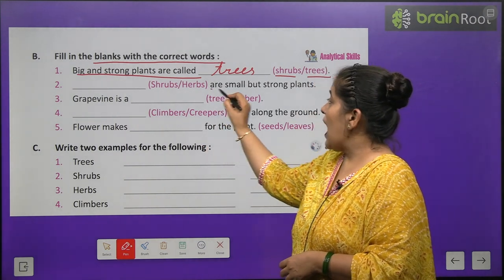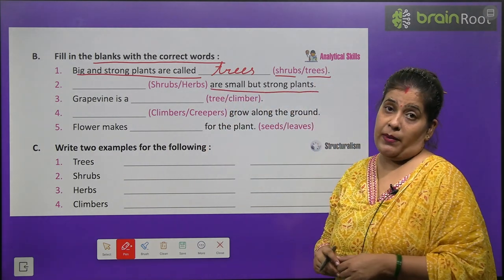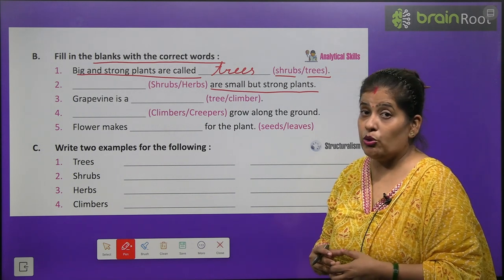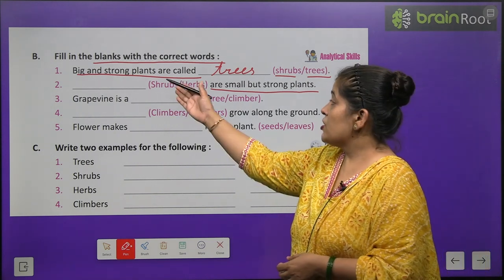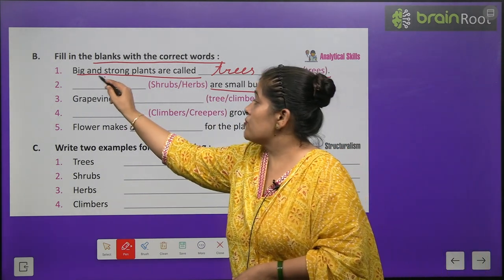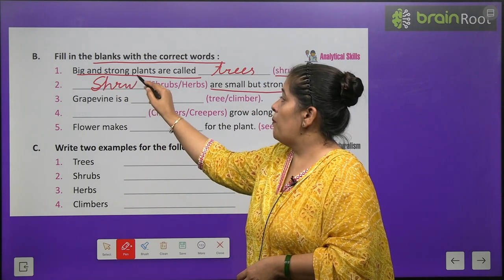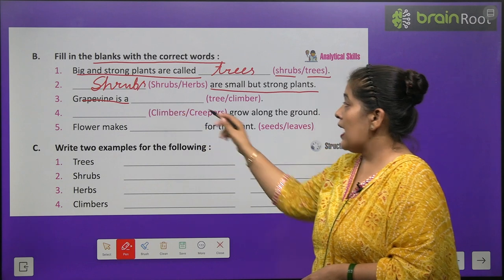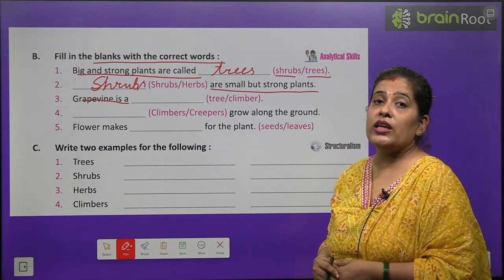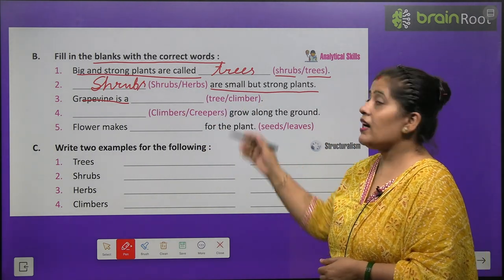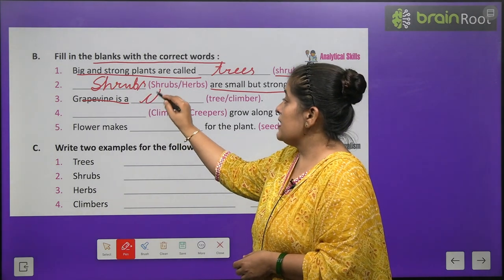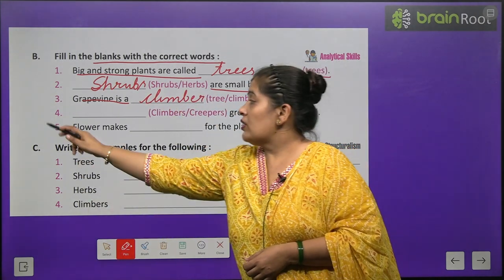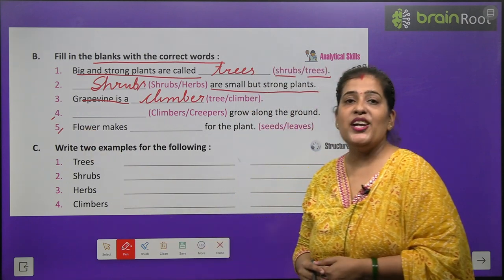Number two: dash are small but strong plants — shrubs or herbs? The correct option is shrubs — S-H-R-U-B-S. Number three: grapevine is a dash — angoor ki bel kya hai? Tree or climber? Vo hai climber — C-L-I-M-B-E-R. Fourth and fifth you will do by yourself.